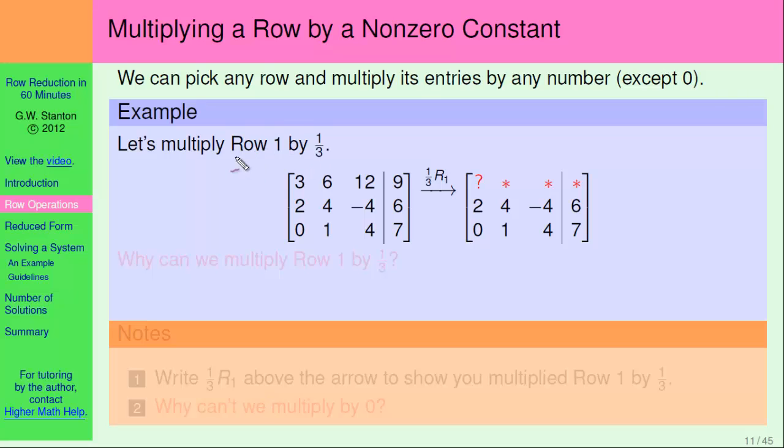Here I'm going to choose row one, and I'm going to choose the number one-third. Any number except zero is fine, so that works. And then I'm going to just take each number in the first row, starting with the three, and multiply by one-third. So let's see what we get.